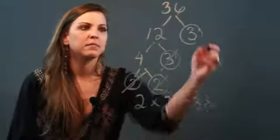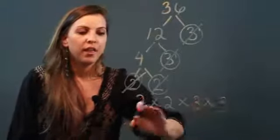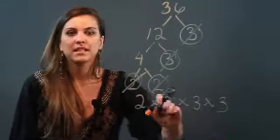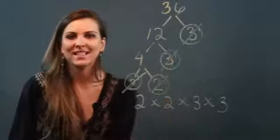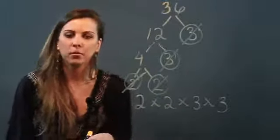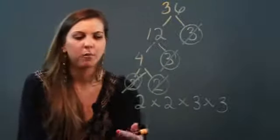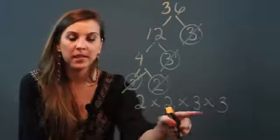This 2 times 2 times 3 times 3 is the prime factorization of 36 in standard form, but normally we like to write in exponential form. So any factor that you see that repeats itself, we're going to write it with exponents.